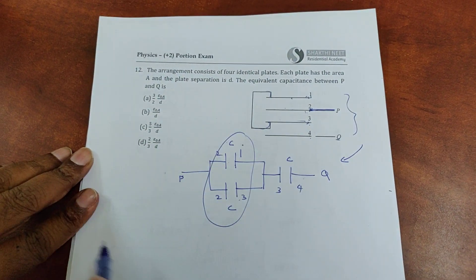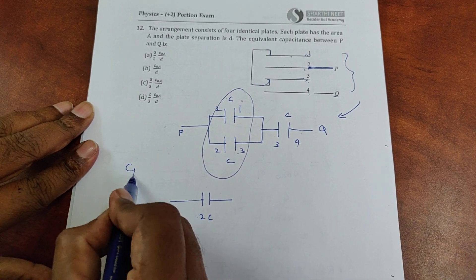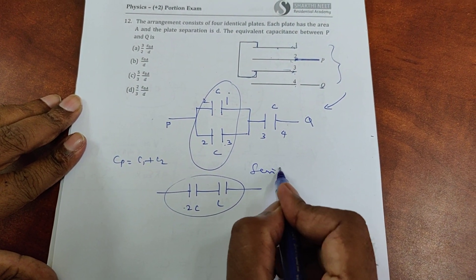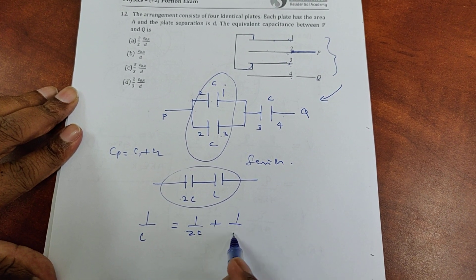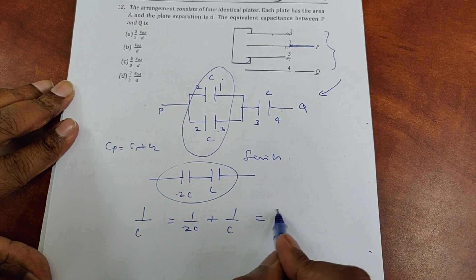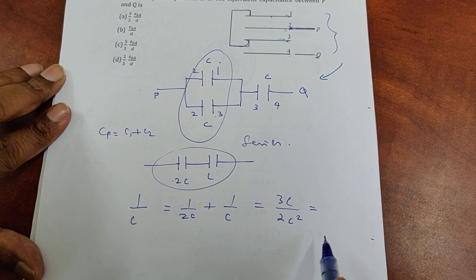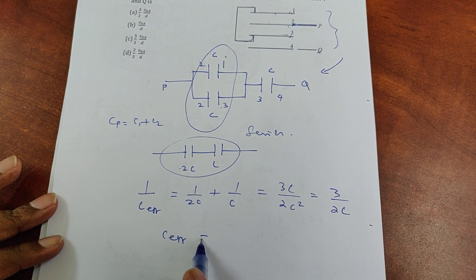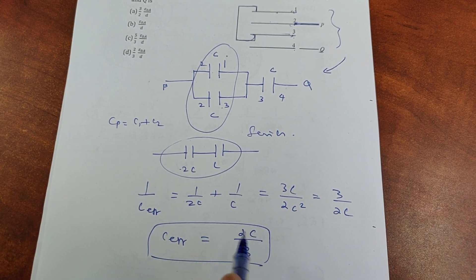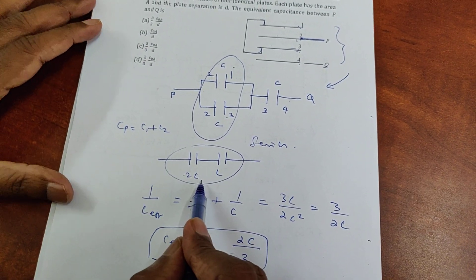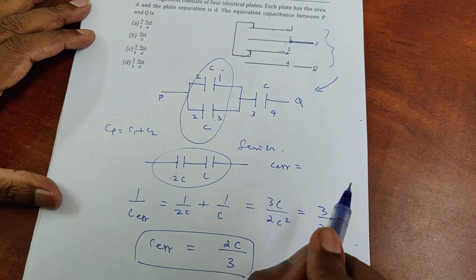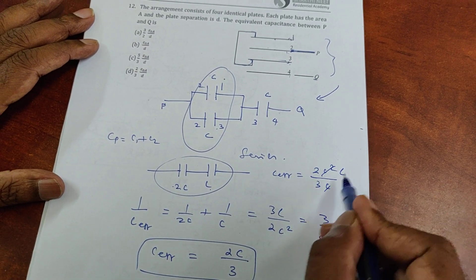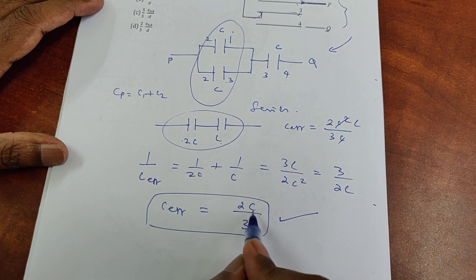The two capacitors (2C in parallel, and C from plates 3-4) are in series. So 1/C_eff = 1/(2C) + 1/C = (1 + 2)/(2C) = 3/(2C), giving C_eff = 2C/3. To do this faster using the product-by-sum method: product = 2C², sum = 3C, so C_eff = 2C²/3C = 2C/3.